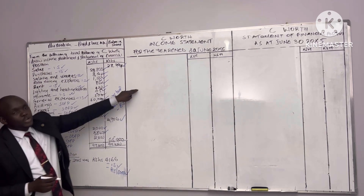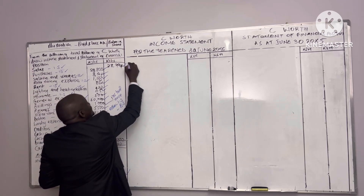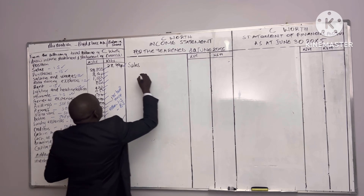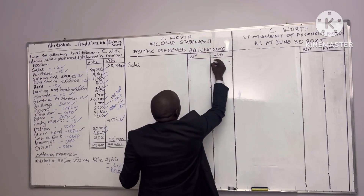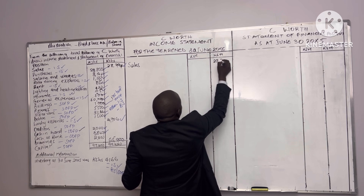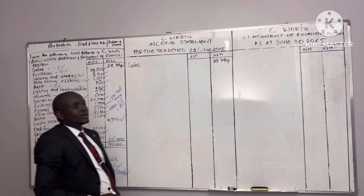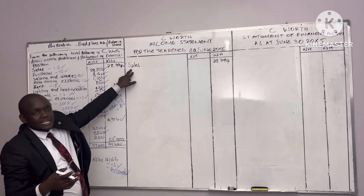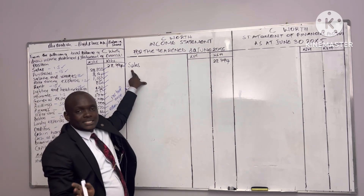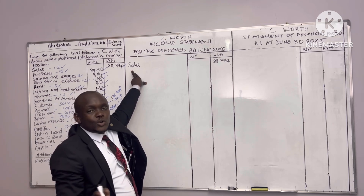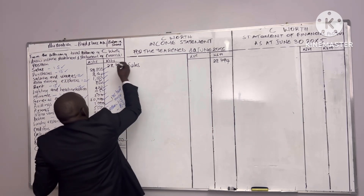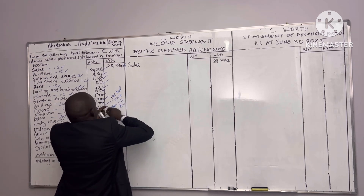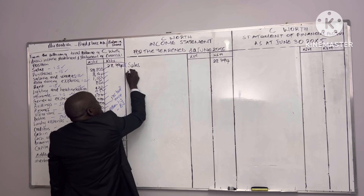For the income statement we start with sales. Sales are posted here — we have 28,794. We don't have sales returns, so nothing was returned to us. This is our actual sales figure, and I can cross this off to show I have posted it.